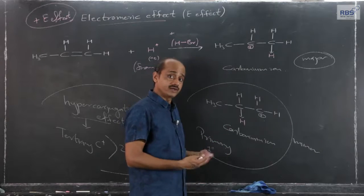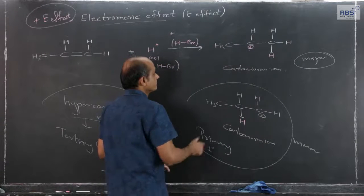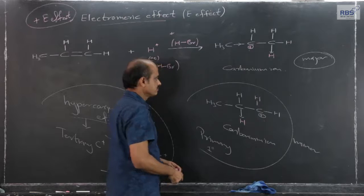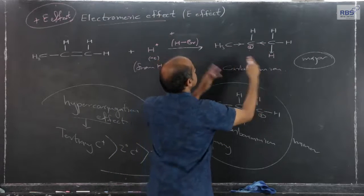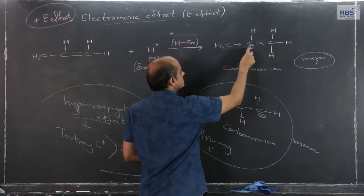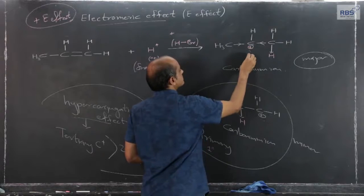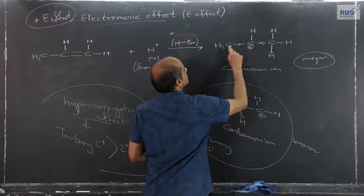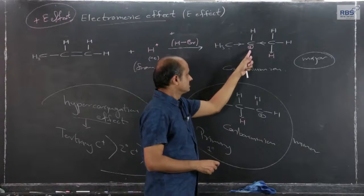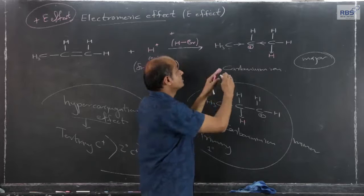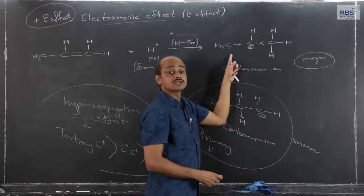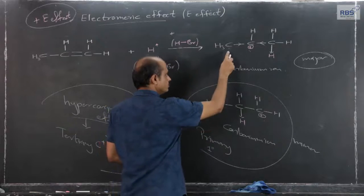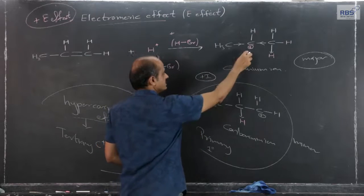This can also be explained using the inductive effect, which we have already covered. There are two methyl groups, and alkyl groups have a positive inductive effect — they release electron density. Because of the two methyl groups, the electron density in the area of this carbonium ion increases. The centralized positive charge gets decentralized on three carbon atoms, giving rise to stability. Due to two methyl groups with +I effect, this secondary carbonium ion is more stable.